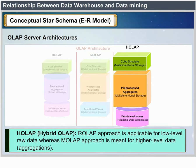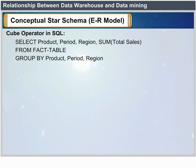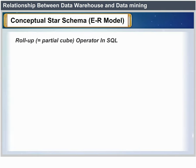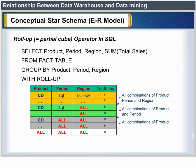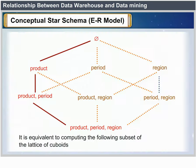The cube operator in SQL: SELECT product, period, region, SUM(total_sales) FROM fact_table GROUP BY product, period, region WITH CUBE. The partial cube operator in SQL uses GROUP BY product, period, region WITH ROLLUP, which reduces the complexity from exponential to linear in the number of dimensions and is equivalent to computing a subset of the lattice of cuboids.